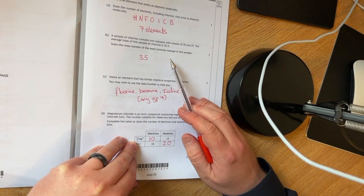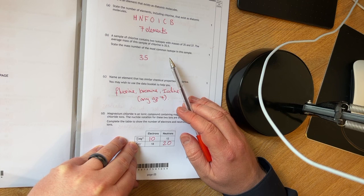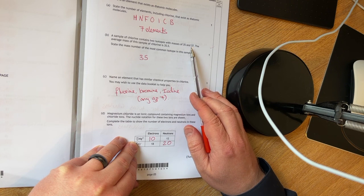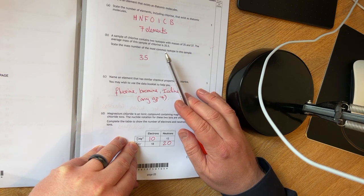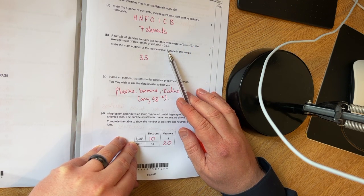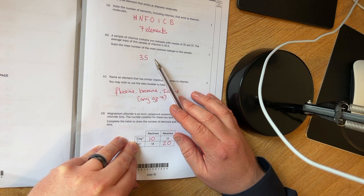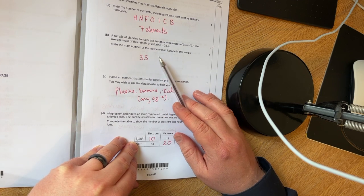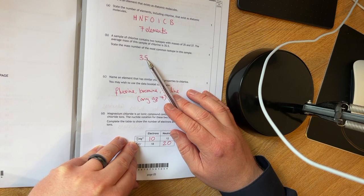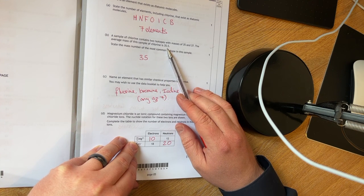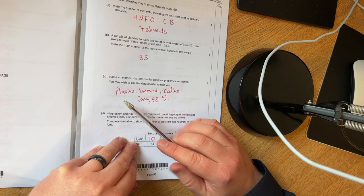Question B. You're given information on a sample of chlorine that contains two isotopes with masses of 35 and 37. The average mass of the sample is 35.5. It's asking you what the most common isotope in this sample is going to be. It's going to be 35 because it is closer to 35.5, which is the average mass of the sample.